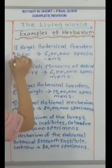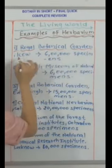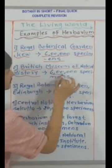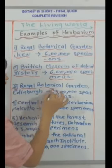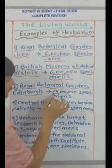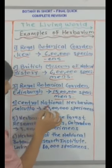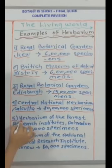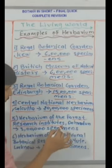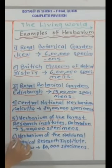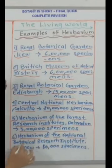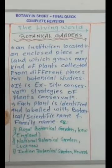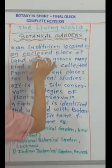Examples of herbaria: Number 1 — Royal Botanical Garden, Kew: 6 lakh specimens. Number 2 — British Museum of Natural History: 6 lakh specimens. Number 3 — Royal Botanical Garden, Edinburgh: 15 lakh specimens. Number 4 — Central National Herbarium, Kolkata: 20 lakh specimens. Number 5 — Herbarium of the Forest Research Institute, Dehradun: 300 lakh specimens. Number 6 — Herbarium of the National Botanical Research Institute, Lucknow: 80,000 specimens.